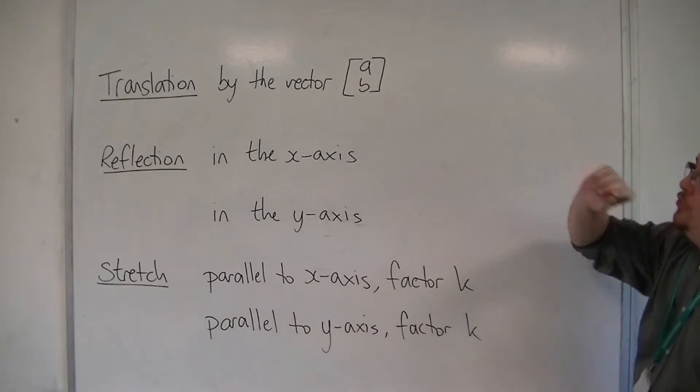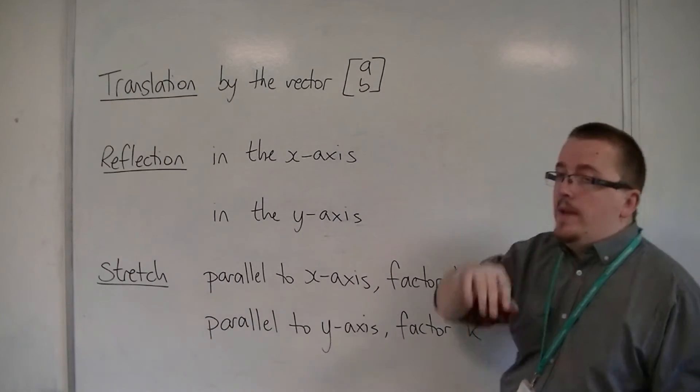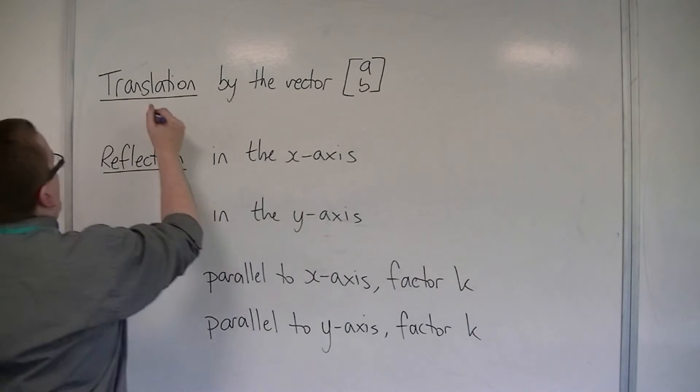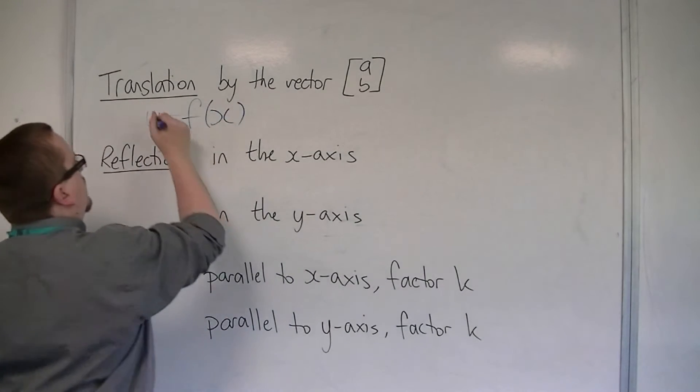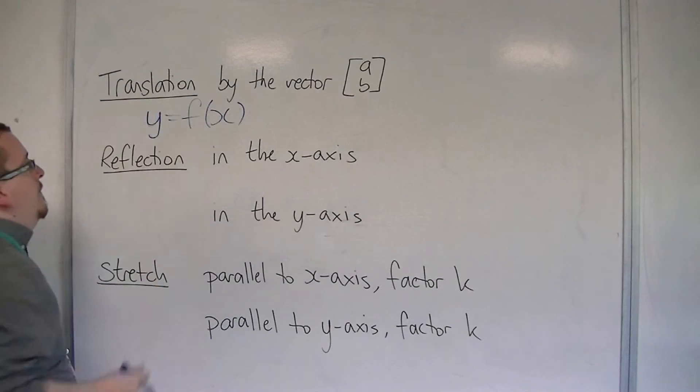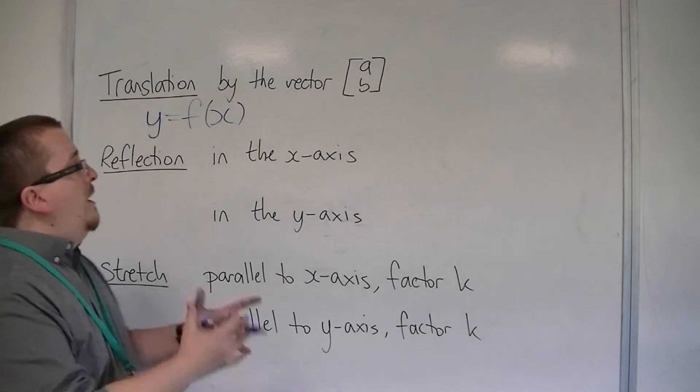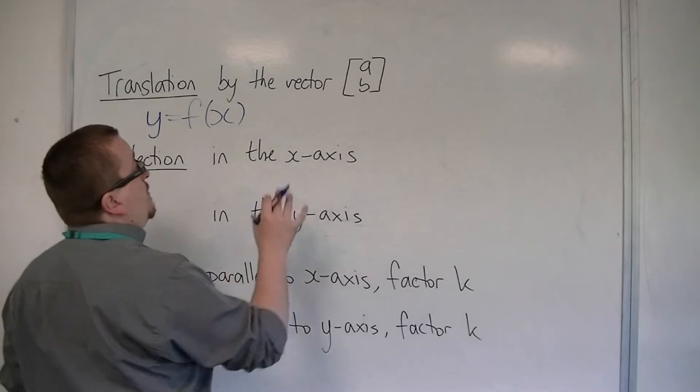For the first, a translation by the vector AB, if we begin with y equals f of x. So y equals f of x, it's translated by the vector AB,